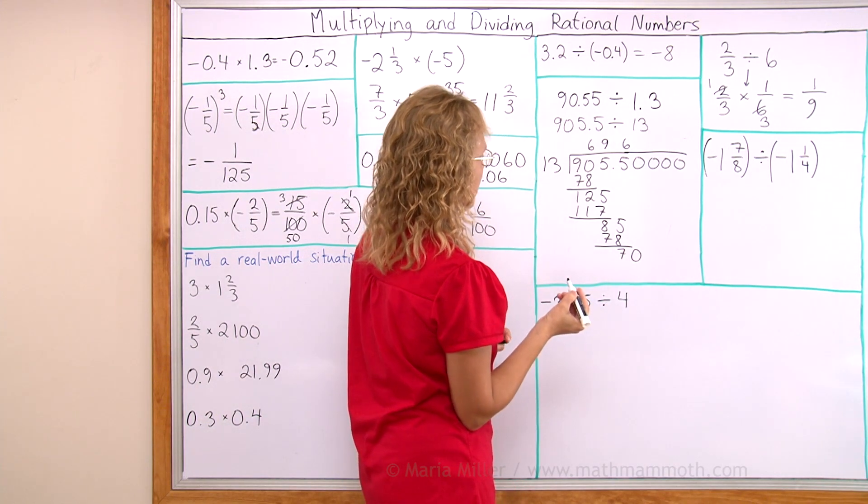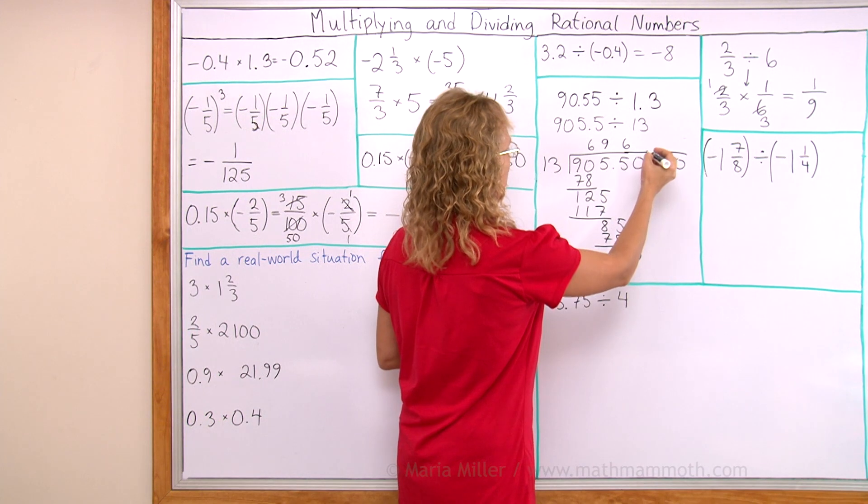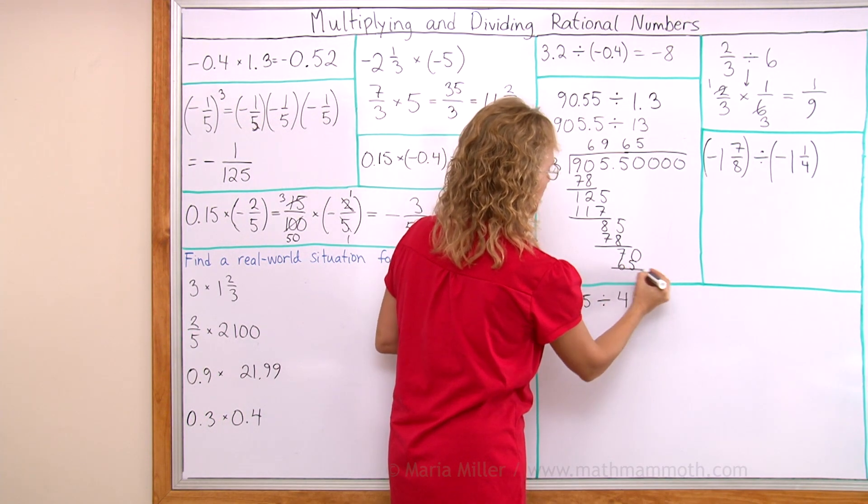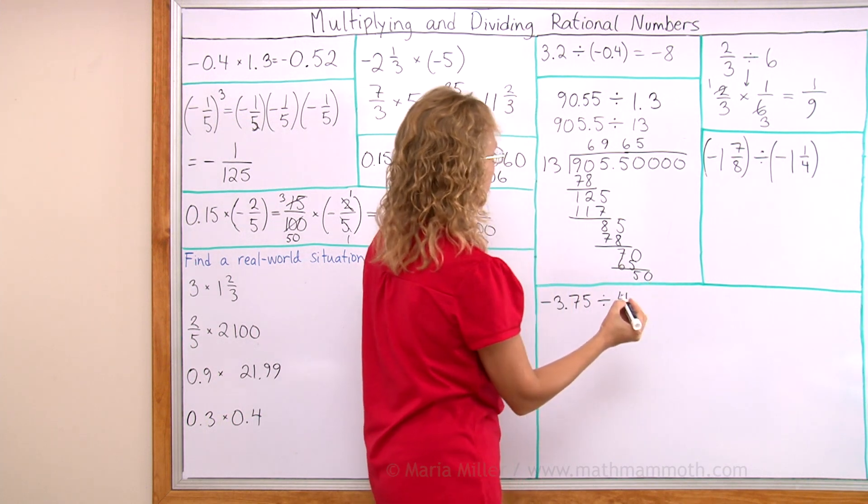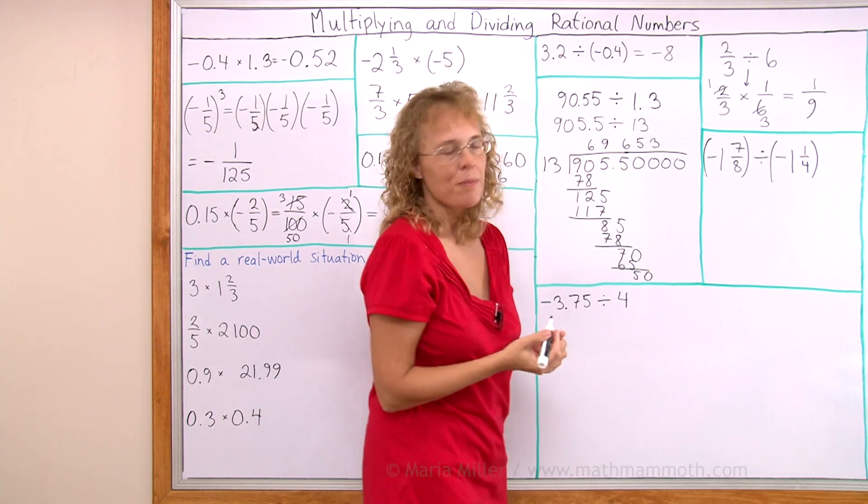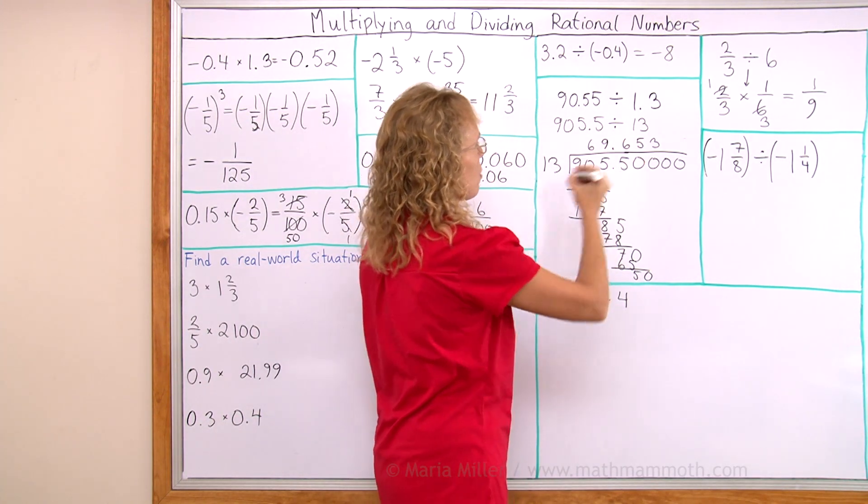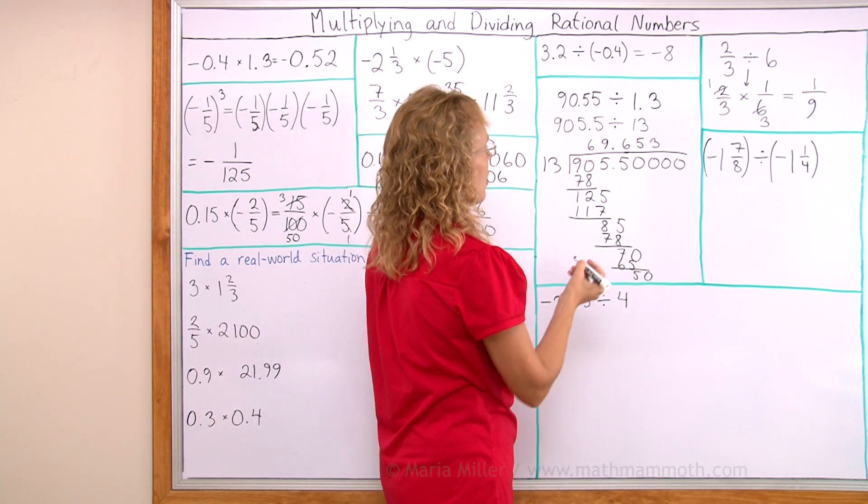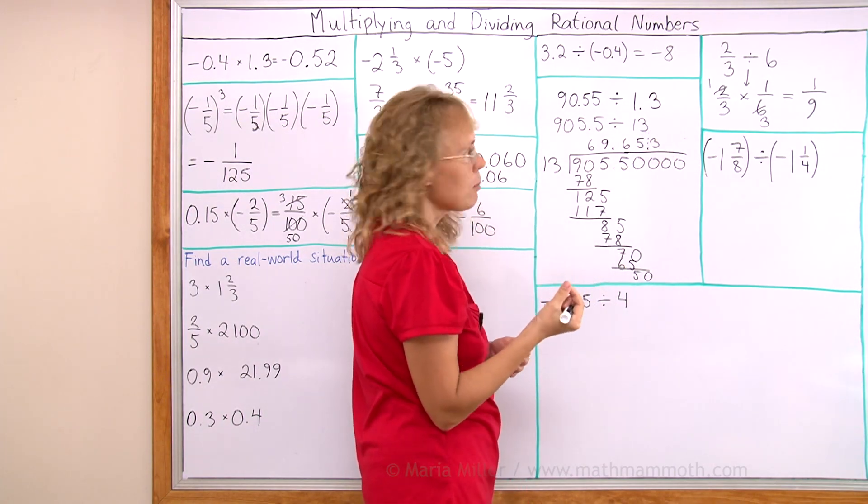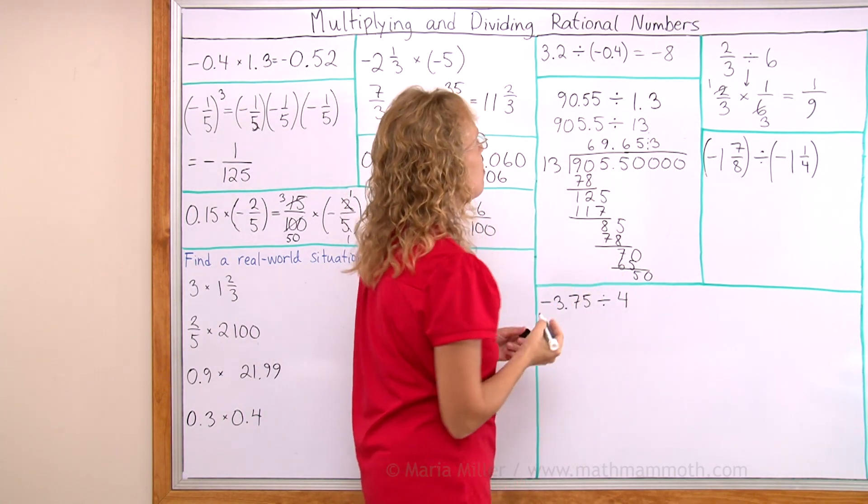Then we get 85, and it again goes six times. Then we get 70. Now it goes five times. And then 50, it goes three times. And so on. So this would continue, and I can cut it off here and round it to two decimal digits and get the answer at 69.65.